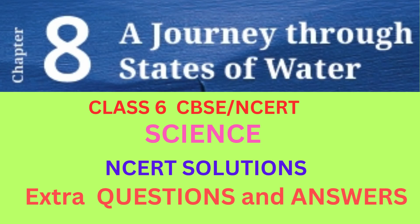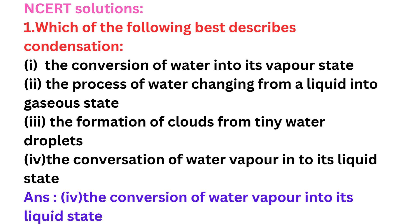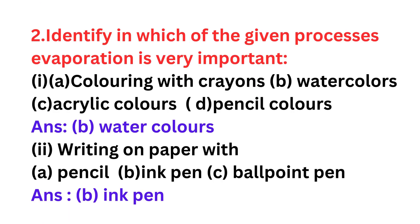NCERT Question 1: Which of the following best describes condensation? Four options are given: (1) the conversion of water into its vapor state, (2) water changing from liquid to gaseous state, (3) formation of clouds from tiny water droplets, (4) conversion of water vapor into its liquid state. The correct answer is option 4: the conversion of water vapor into its liquid state.